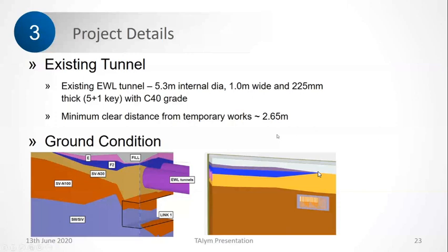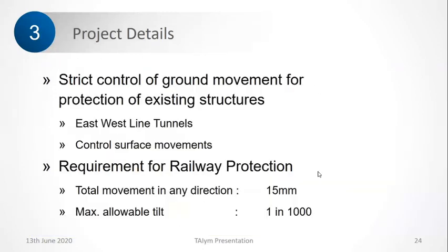The existing tunnel has a 5.3 meter internal diameter, constructed in the 1980s, and was not in good shape. When I went for inspection, there were a lot of leakages and cracks in the segments — very unusual for Singapore. The thickness of the segment is only 225 millimeters with very little cover, so it was not in good shape. Basically we had to underpass a structure which was not in good shape and in very close proximity. The requirement from the authorities was that movement in any direction should not be more than 15 millimeters, and the tilt of the tunnel should not increase by more than one in a thousand.